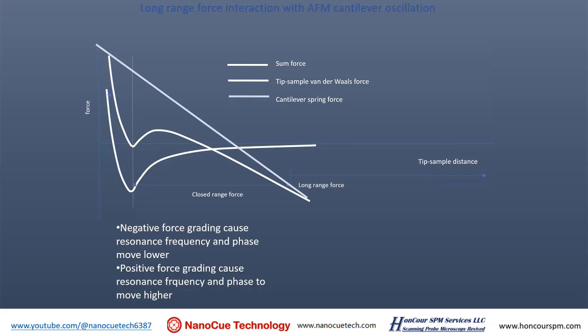Going back to the tip-sample interaction: assume the dotted line is the turning point from attractive to repulsive, typically a nanometer to 10 nanometers. The exact distance depends on the sample — for example, a silicon surface or a protein is quite short range, about a nanometer or so. Beyond a nanometer, the short range force disappears. But for some samples like polymers, because of their strong charge, this distance is a little bit longer.